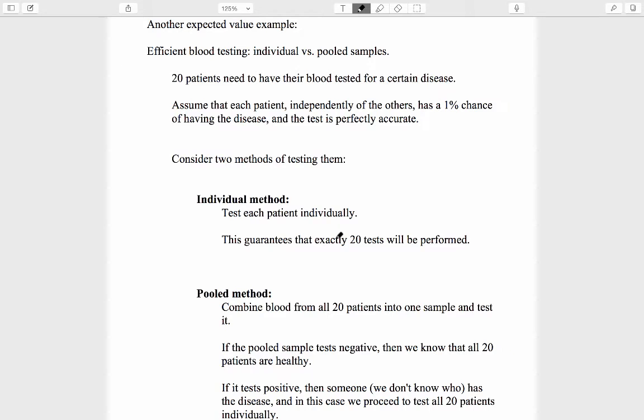And you're thinking, what else could you possibly do? Ah, this is the other thing you could possibly do, and that's the pooled method. You could draw blood from each patient and then combine the blood drawn from all 20 patients into one sample, and then test that one pooled sample of blood. Let's think about this.